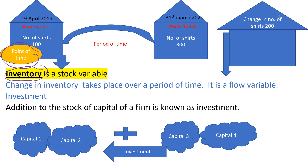Let us assume there is a firm which produces shirts and has a warehouse. On 1st April 2019, the number of shirts kept in the warehouse is 100. So we are measuring the stock maintained by the firm on 1st April 2019, which is 100 shirts — measured at a point of time. Because of this reason we call inventory a stock variable.